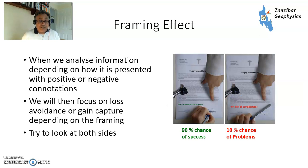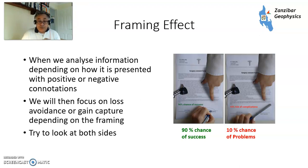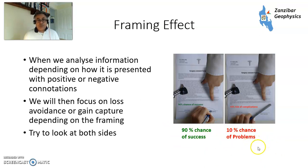Then there's the framing effect. This is more of an issue for people on the receiving end of the information — the decision maker. So if you're an exploration manager and someone has a proposal in front of you, sometimes it's the way they frame it. Like the figure on the right: 90% chance of success versus 10% chance of problems. If you hear 90% chance of success you feel warm and fuzzy; if someone gives you 10% chance of project problems, you start asking what problems and how is it going to work. So try to look at both sides and be objective — not always easy.